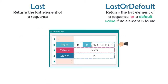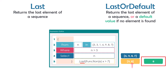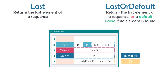I have an array of seven numbers and a condition to get only numbers greater than five, giving a collection of four numbers. Using Last with a lambda expression to get numbers greater than seven narrows the result to two numbers, and Last returns the last one from that filtered collection. I get the same result with LastOrDefault. Changing the condition to numbers greater than 10 gives an empty result — Last throws an exception, but LastOrDefault returns zero as the default value because there are no elements in the sequence.